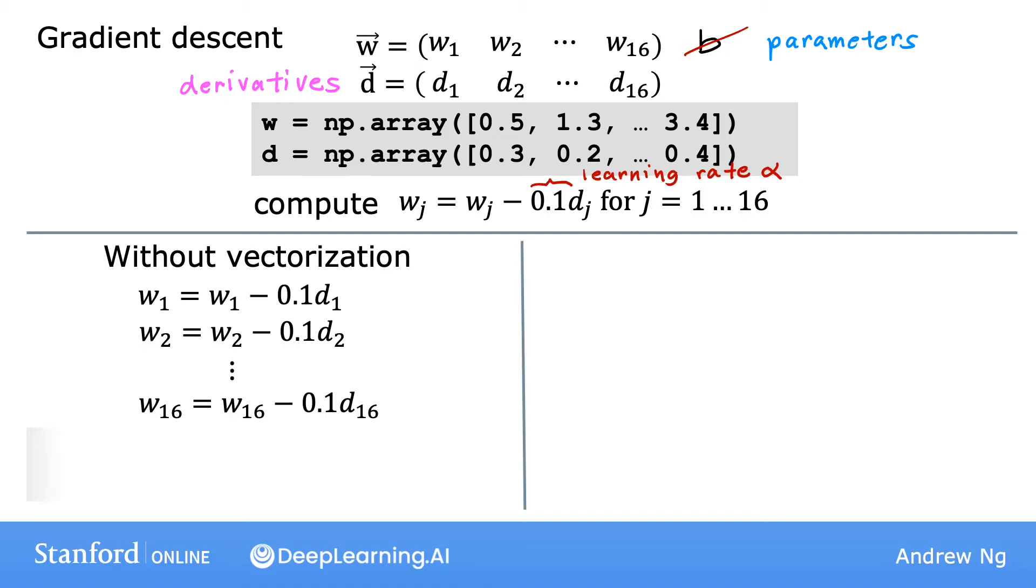In code, without vectorization, you could use a for loop like this. For j in range 0, 16, that again goes from 0 to 15, set Wj equals Wj minus 0.1 times Dj. In contrast, with vectorization, you can imagine the computer's parallel processing hardware like this.